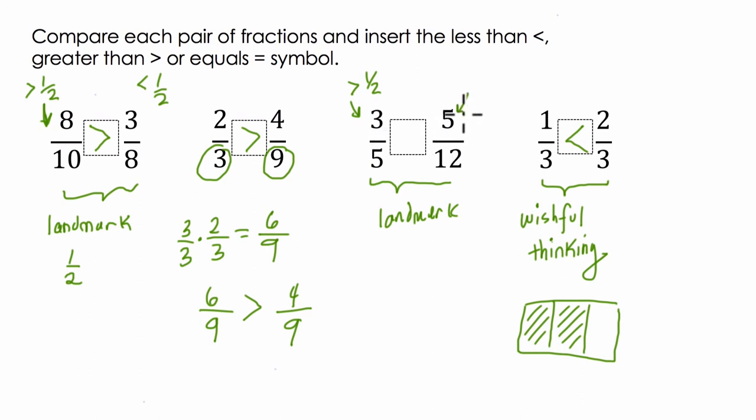The second fraction, five out of 12, that's less than one half. I know six is a half of 12. So if I had six twelfths, that would be exactly one half. So if this is less than a half, and this is bigger than one half, three fifths is larger.